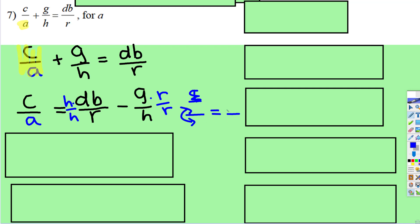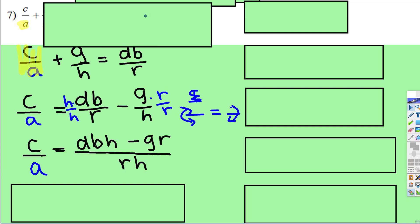Then you can flip both sides. So I simplify that and multiply this side top and bottom by h, so that gave me dbh. And I multiplied here top and bottom by r, so that gives me subtract gr. And now they share the same denominator as r times h.